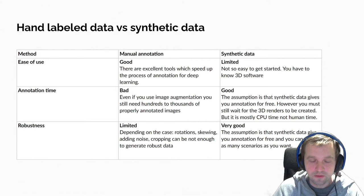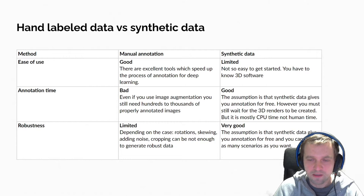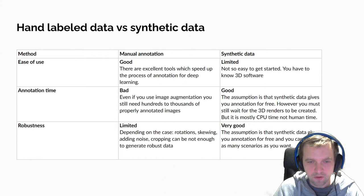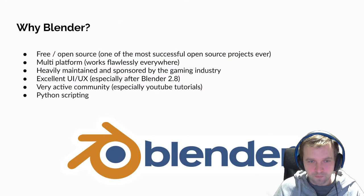This is the area where synthetic data generation really shines — you can have pixel-wise annotation almost for free. It's enough to create the 3D scene and you get annotations for free. You also get the opportunity to change the environment, the lighting conditions, and rotate objects in 3D space — something that is not possible with manual tools. Standard augmentation libraries rely only on 2D rotation, skewing, adding noise, warping the image — they don't truly understand what's in the image.